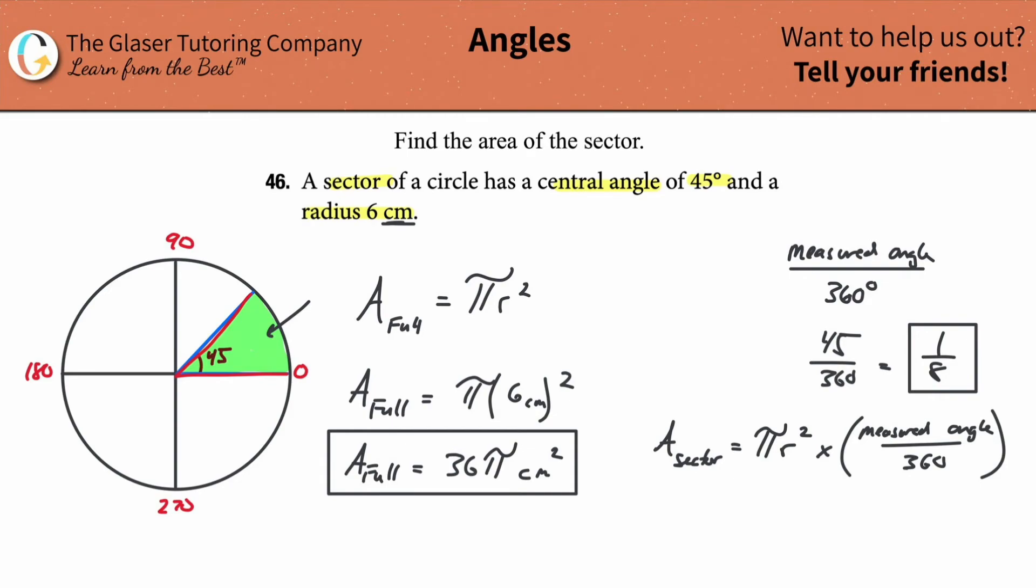So we have a formula we can use. We don't even need the formula, though. We can understand that if I found the full, and I know now this represents one-eighth, I can just take this answer and multiply it by one-eighth. It doesn't really matter. They're all going to work out to be the same.